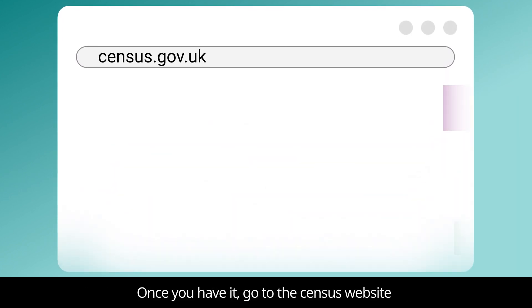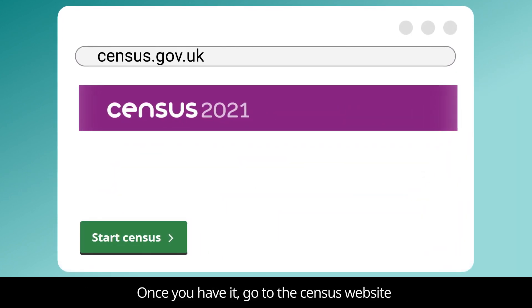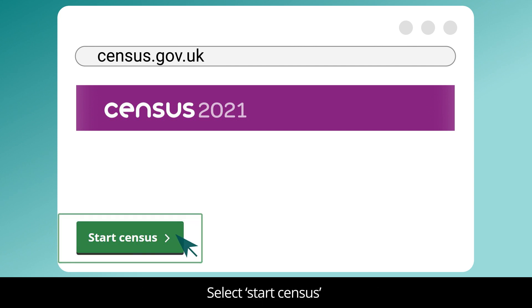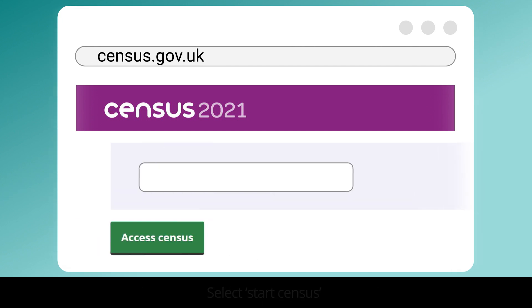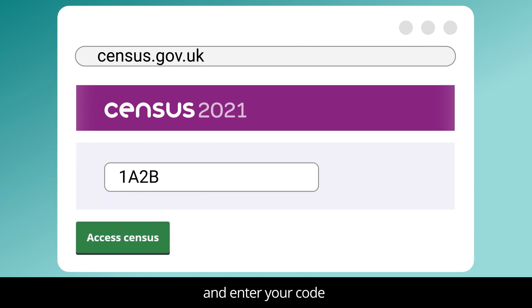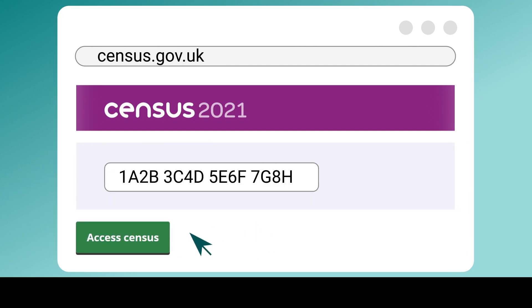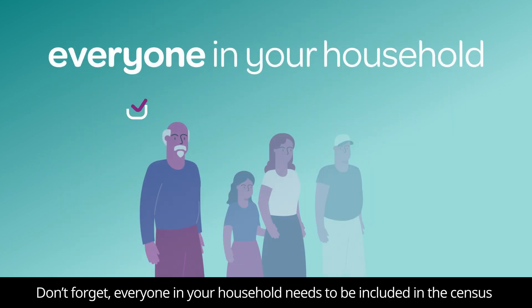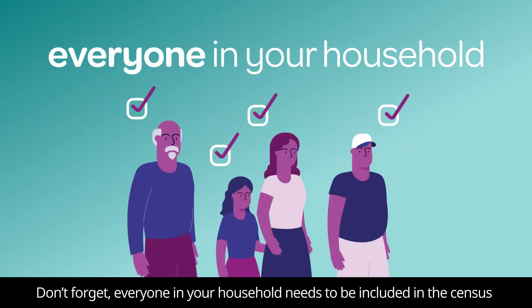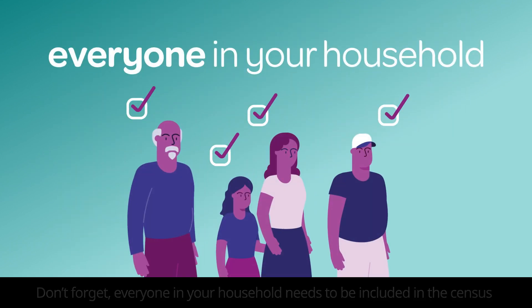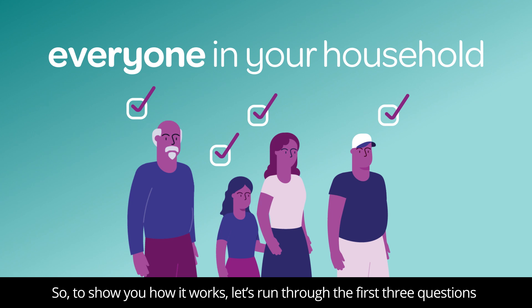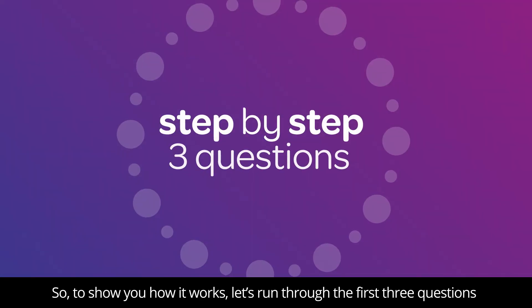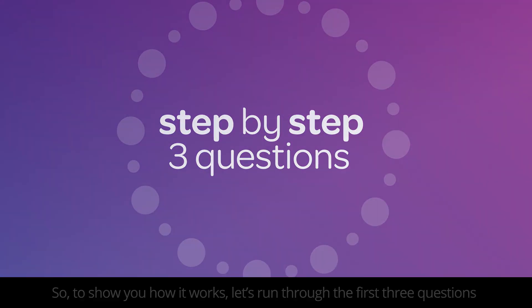Once you have it, go to the Census website. Select Start Census and enter your code. Don't forget everyone in your household needs to be included in the Census. So, to show you how it works, let's run through the first three questions.